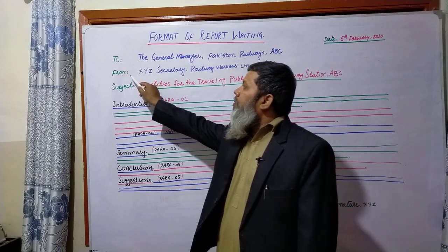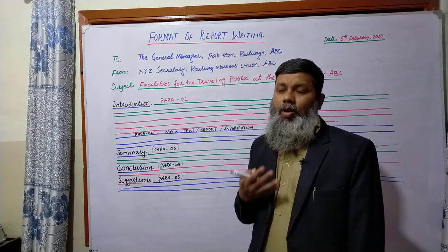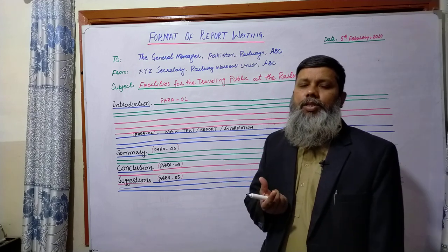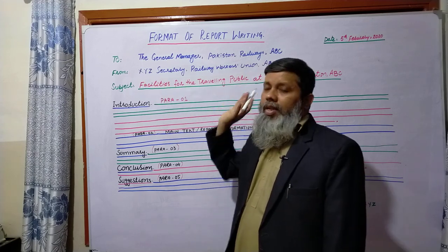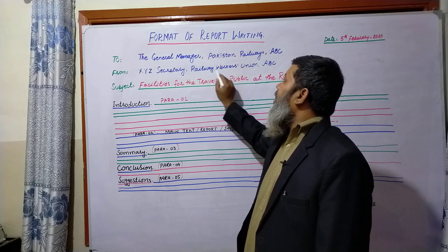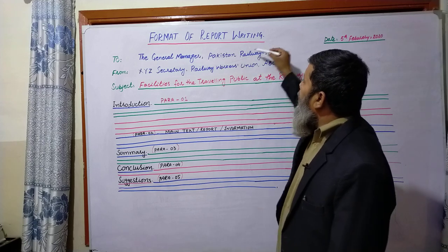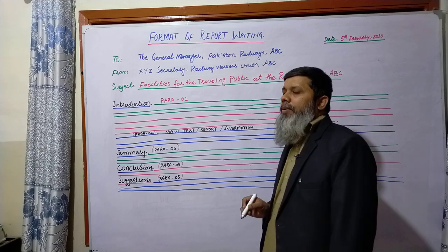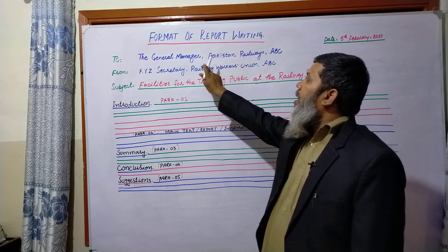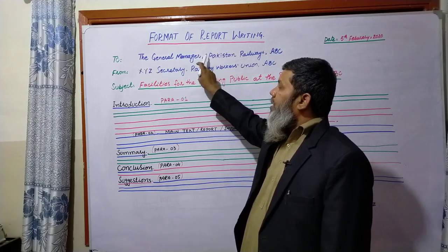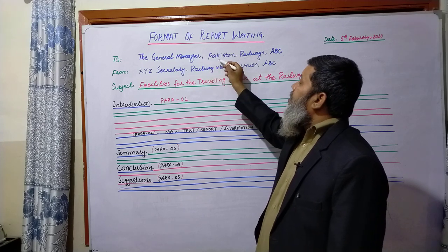Next comes 'From', which means who is going to write the report — who is the writer. Suppose you are writing it, then you will mention your designation, your post. For example, we write XYZ, and Secretary, Railway Workers' Union. So as secretary of the railway workers' union, I am writing this report. You can write it on one line with a comma.